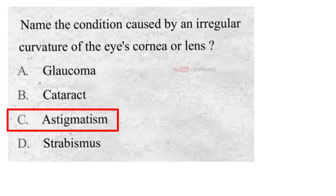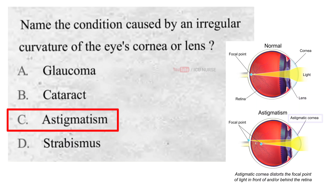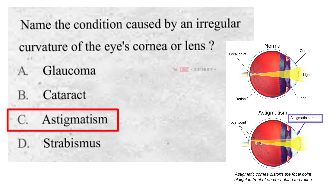C. Astigmatism. Astigmatism is a common vision problem caused by an error in the shape of the cornea. With astigmatism, the lens of the eye or the cornea — the front surface of the eye — has an irregular curve. This can change the way light passes or refracts to your retina, causing blurry, fuzzy or distorted vision.